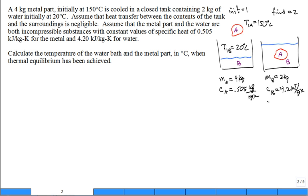They're asking for T2 of the metal and T2 of the water after thermal equilibrium. But do we really calculate two temperatures? There's really only one unknown — it's just T2. I'll drop the subscripts A and B; it's just the final temperature, the same for both metal and water at thermal equilibrium. I need to solve for T2 in degrees C.